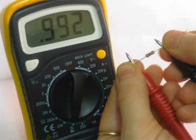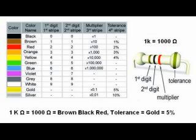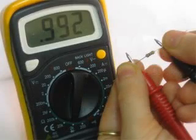Try reversing the test probe connections on the resistor. Does this change the meter's indication at all? What does this tell us about the resistance of a resistor? What happens when you only touch one probe to the resistor? Remember, the tolerance is given by the fourth band — in this case gold, which means 5%. 0.05 times 1000 equals 50, so this resistor's resistance should be within 1000 plus or minus 50 ohms, or 950 to 1050 ohms. So the resistor in this picture is within tolerance. Is yours?